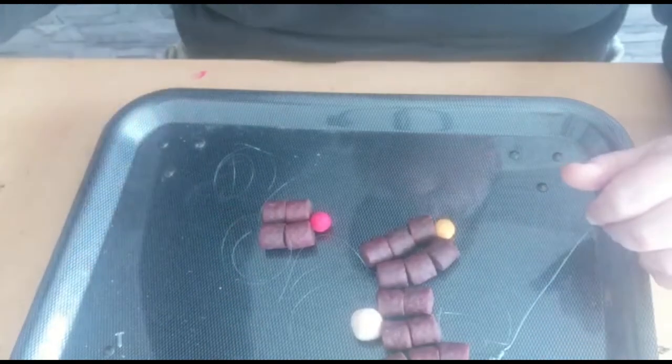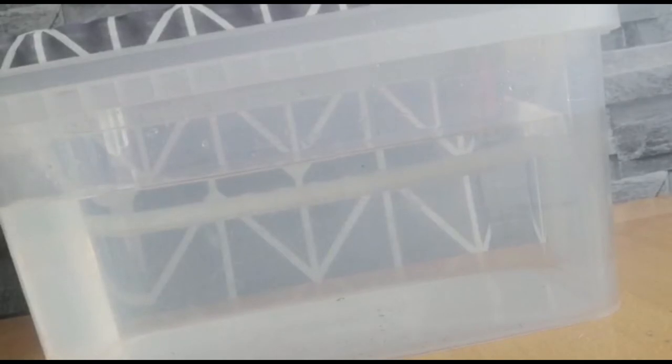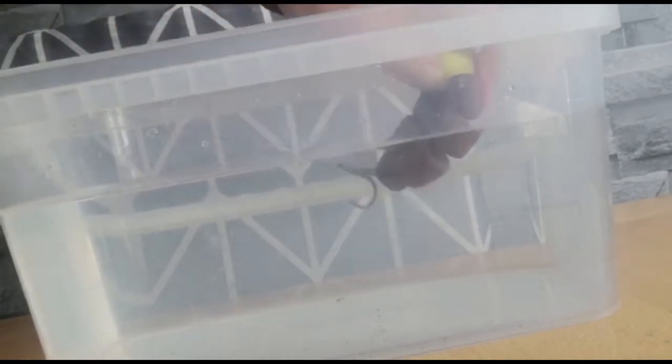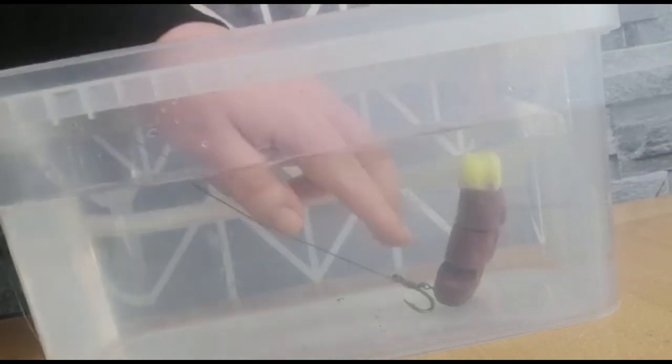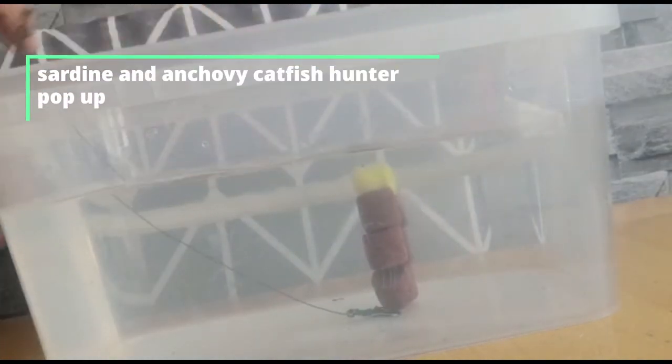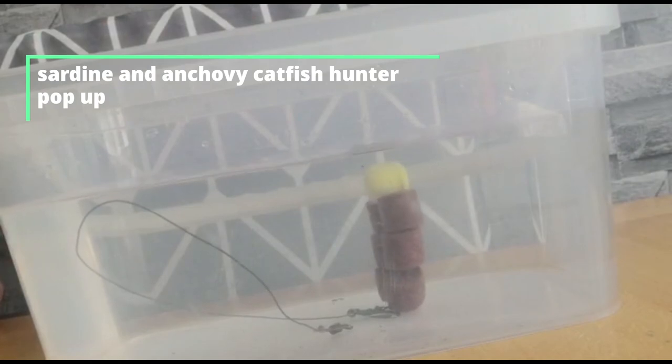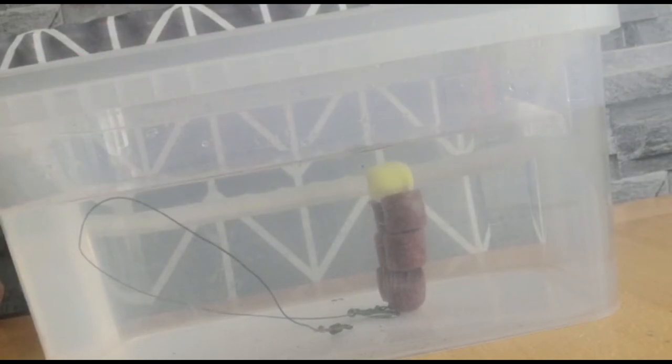All right, guys, so first rig that I'm going to chuck in, it's the one that I've just shown you: six pellets and UK Angling sardine and anchovy catfish hunter pop-up. And that's how your six pellets and a really big pop-up should present when they're underwater.